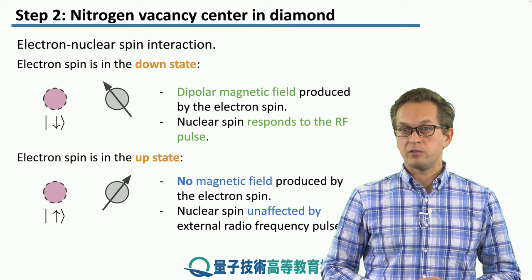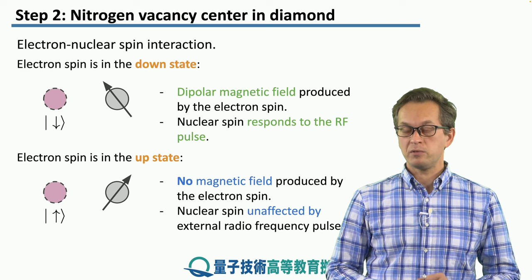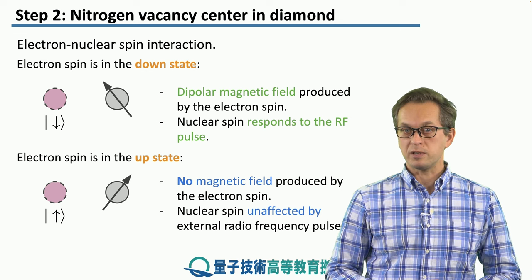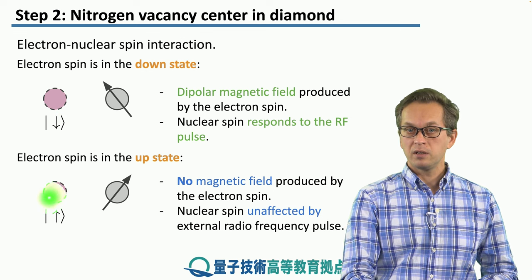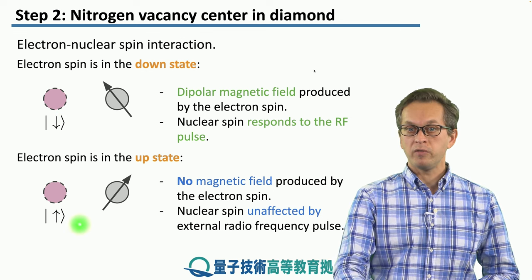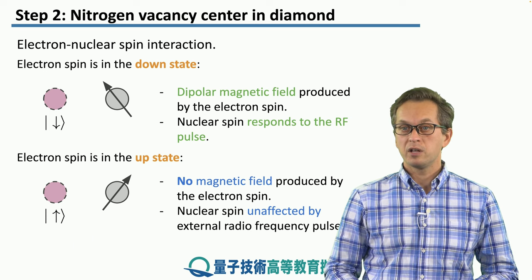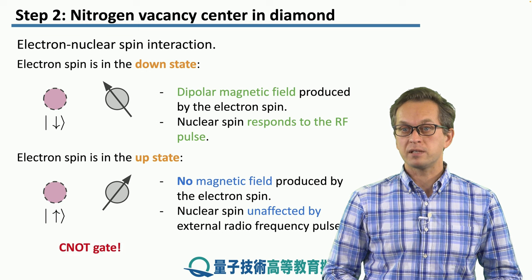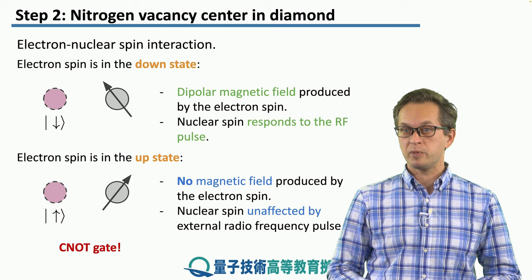This is very interesting. We are applying the same operation — the radio frequency pulse, always tuned to the same frequency — but by controlling the state of the electron spin, we can create a conditional operation on the nuclear spin. So effectively, we are performing a CNOT gate. This can be used to entangle the electron and nuclear spin and transfer information between them.